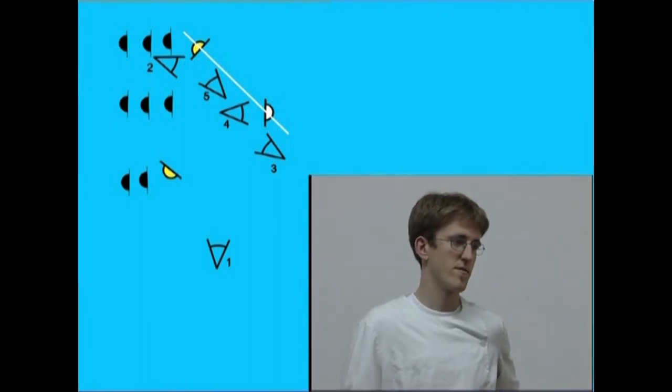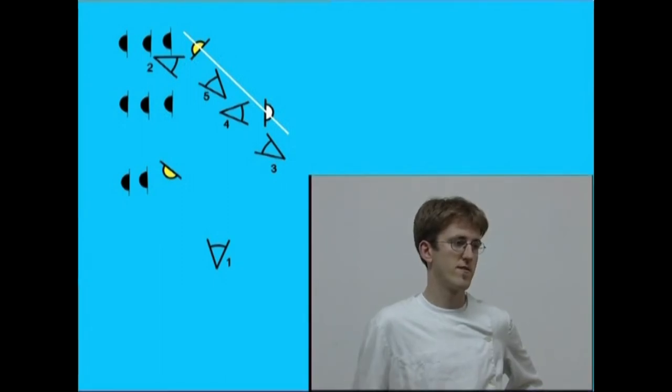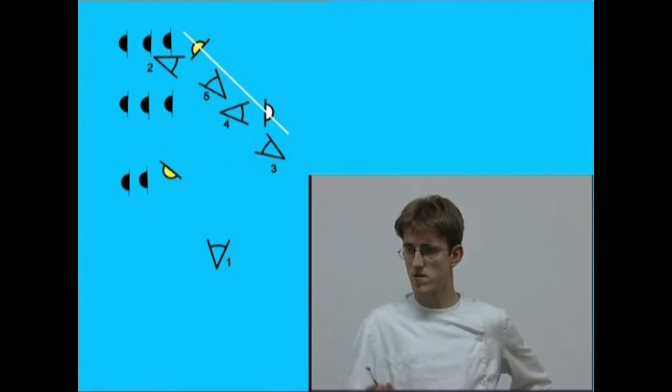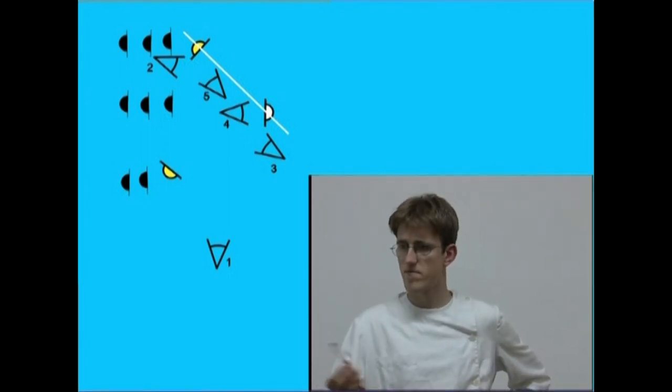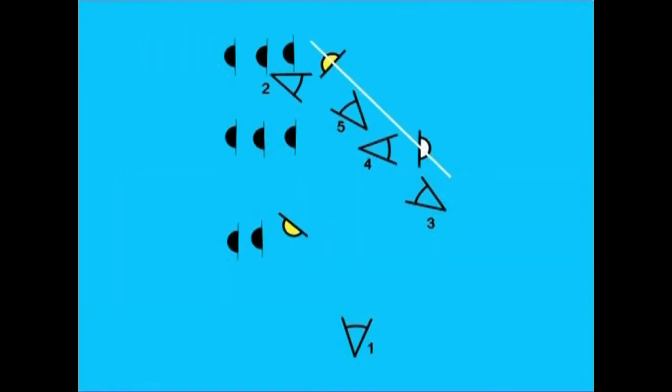Lau kokagunetik, barrualdeko angeluz kontrajarritik, soilik irakaslea ikusiko dugu. Bost kokagunetik, barrualdeko beste angeluz kontrajarritik, soilik ikaslea ikusiko dugu. Seigarren planoa egiteko, lau kokagunera joko dugu eta bertatik irakaslearen jardunaren bukaera eta beste ikaslearen ganako begiradaren norabidearen bihurtzea hartzen ditugu.